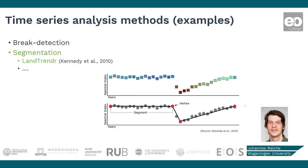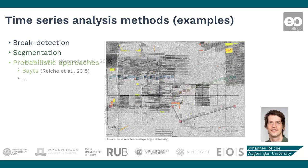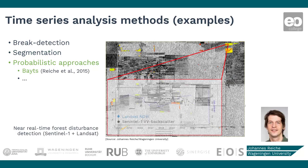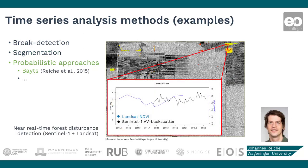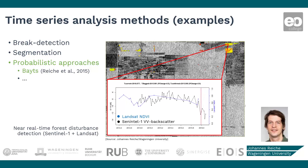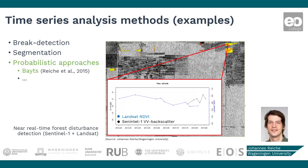Segmentation-based methods like LandTrendr fit segments to a time series of annual observations, and with this detect different change patterns. Other methods include probabilistic approaches. In probabilistic approaches, satellite observations are first converted into forest and non-forest probabilities, and change is detected once it diverges from the distribution of a stable history period.